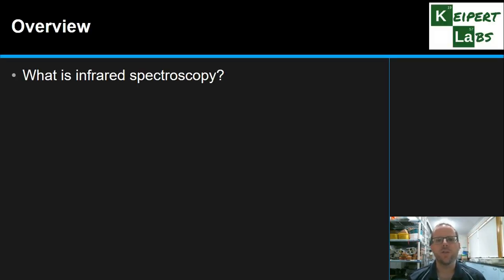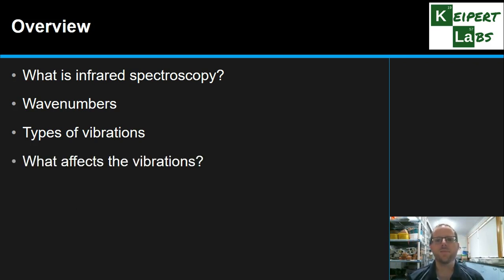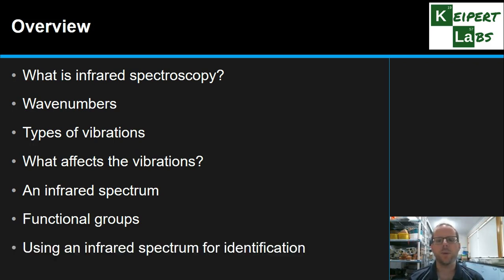We're going to start by introducing what we mean by infrared spectroscopy. We're going to introduce the concepts that we use when we measure, this way called wave numbers. We're going to look at the types of vibrations that occur in a molecule as a result of infrared radiation. We're going to look at the factors that affect the vibrations that a molecule might do. We're going to examine an example of an infrared spectrum. We're going to look at the different functional groups we can use to solve a puzzle with this sort of spectrum, and then we're going to look at an example of actually using it for the identification of a particular substance.